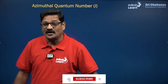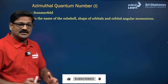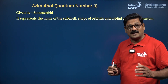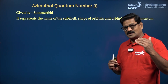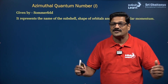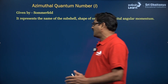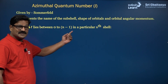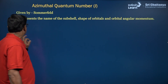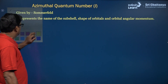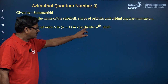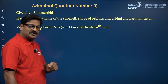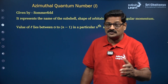Moving forward, the azimuthal quantum number was provided by Sommerfeld. It talks about the shape and size of the orbitals and signifies the subsidiary shells — the sub-energy level to which an electron belongs — denoted as L. The value of L ranges from 0 to N−1 (maximum). Importantly, for the Nth shell, L can never be equal to N.